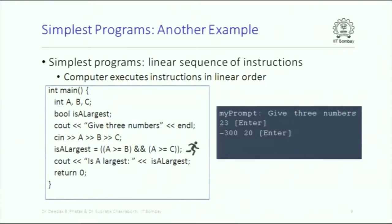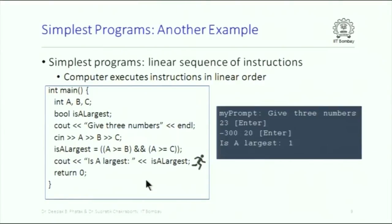Next it will execute the assignment statement — nothing appears on screen but internally the expression on the right (a logical expression) will be evaluated, resulting in a bool value true or false, which gets assigned to isLargest. Notice how this flag is beautifully used in getting the result directly. C out isLargest — the answer is 1. Why? Because of the three values: 23 goes to A, -300 goes to B, 20 goes to C. Among these three values A is indeed the largest, so the comparison evaluates to true and that is what will be printed.